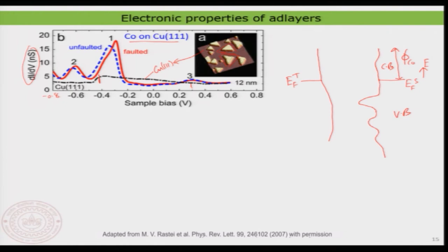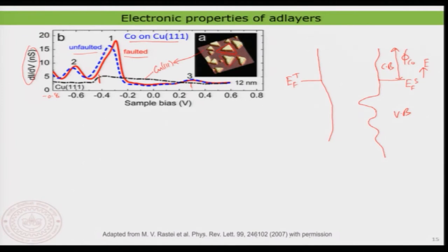Interestingly, when measuring the density of states on two different types of islands — one pointing like an upward triangle and another like a downward triangle, called faulted and unfaulted — there is a small but important variation in the density of states between them. This is crucial because tunneling spectroscopy is a local measurement: with an atomically sharp tip, you can image the surface, select a specific island, place your tip on it, and measure the spectrum.